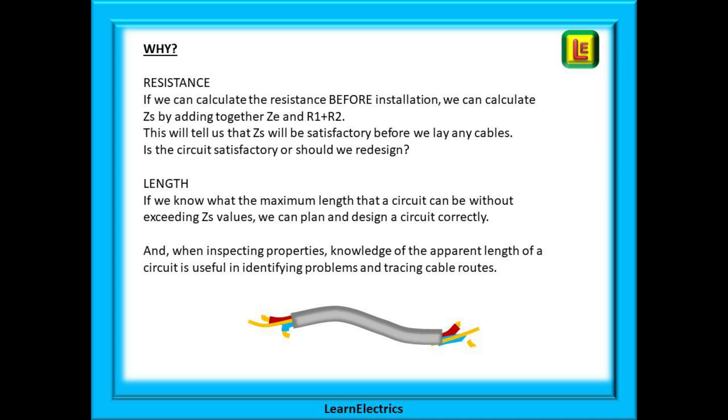Again, imagine installing a single circuit only to find that it is too long for the breaker size and cable size installed. If we knew this before we even laid the cables, we could explore the options of increasing the cable size or even running two separate circuits, each of which meets the required ZS values. And when inspecting properties, knowledge of the apparent length of a circuit is useful in identifying problems and tracing cable routes. These calculations are a way of forewarning yourself of potential problems and taking the right steps before you start spending time and money laying cables. And I hope you find them useful.